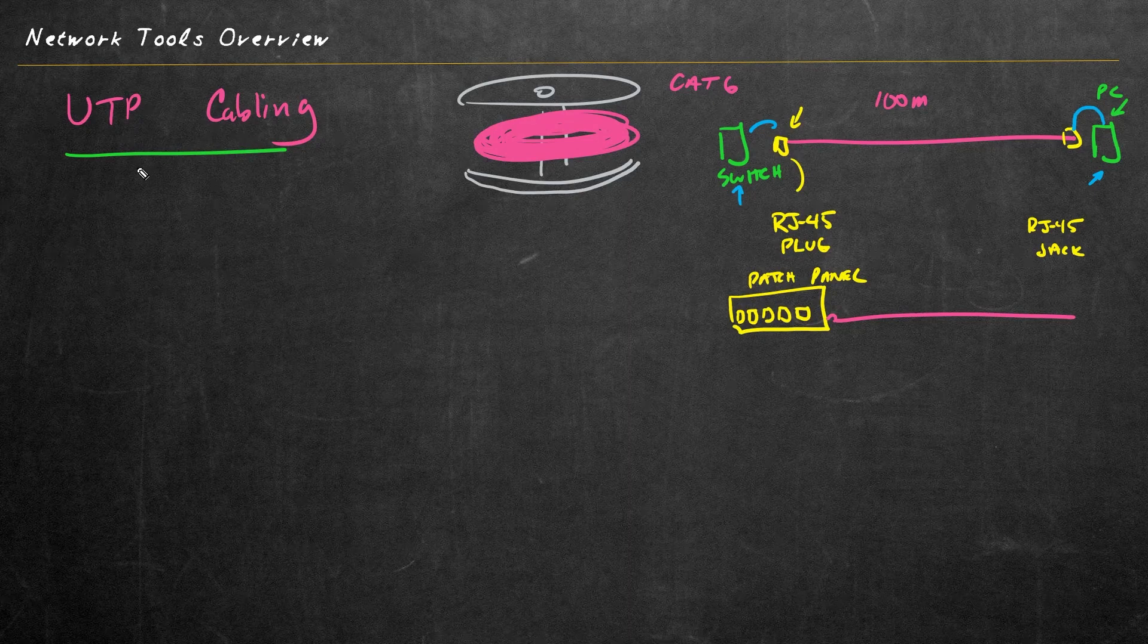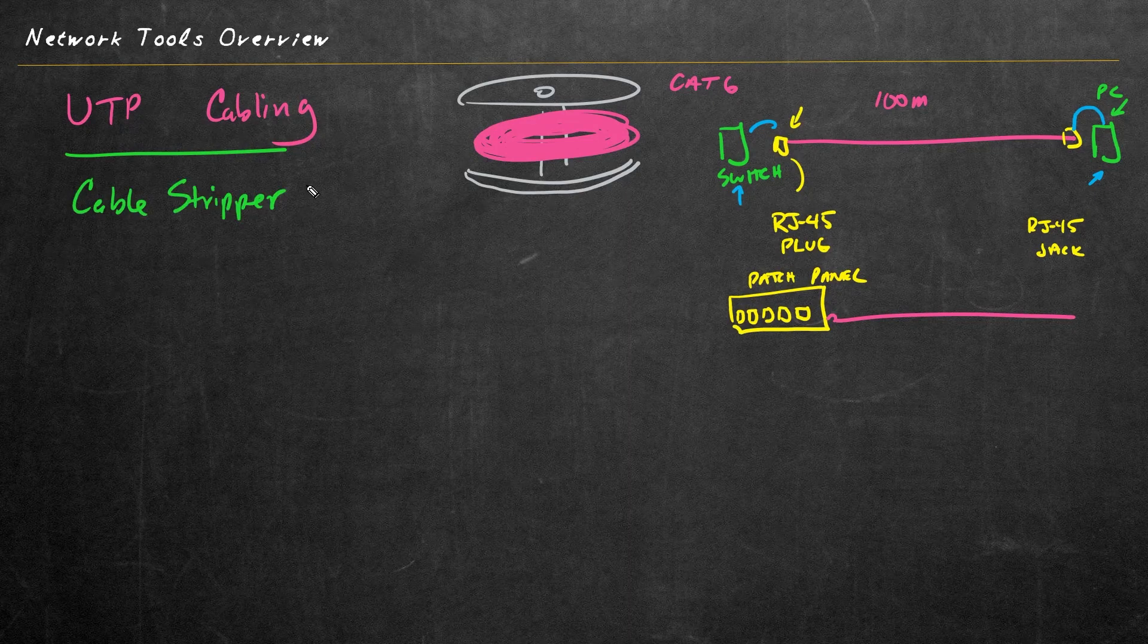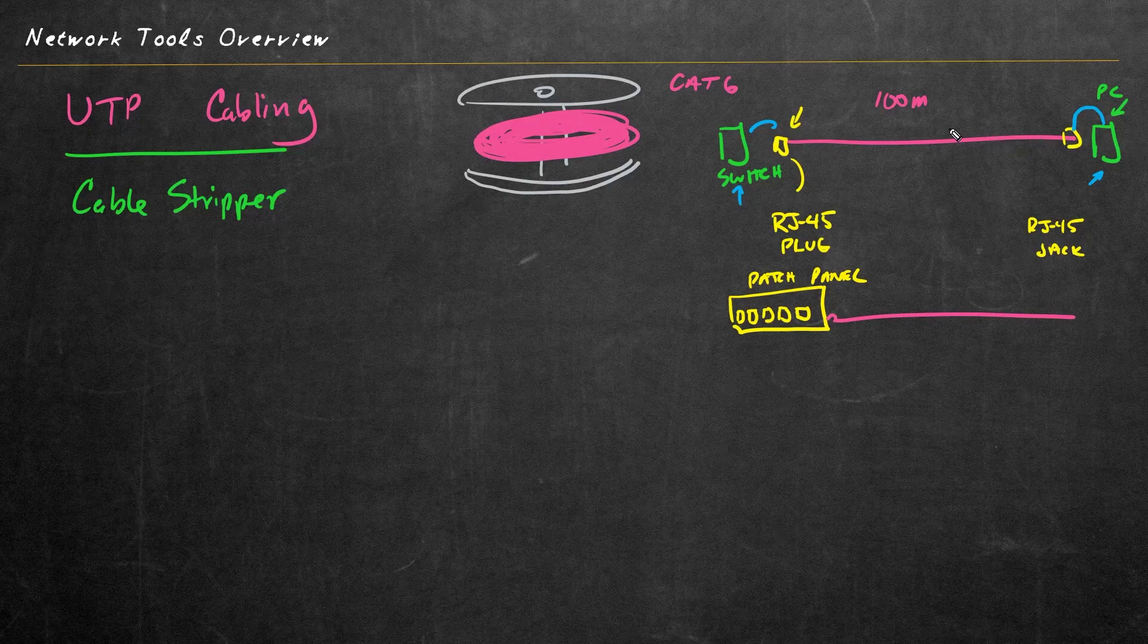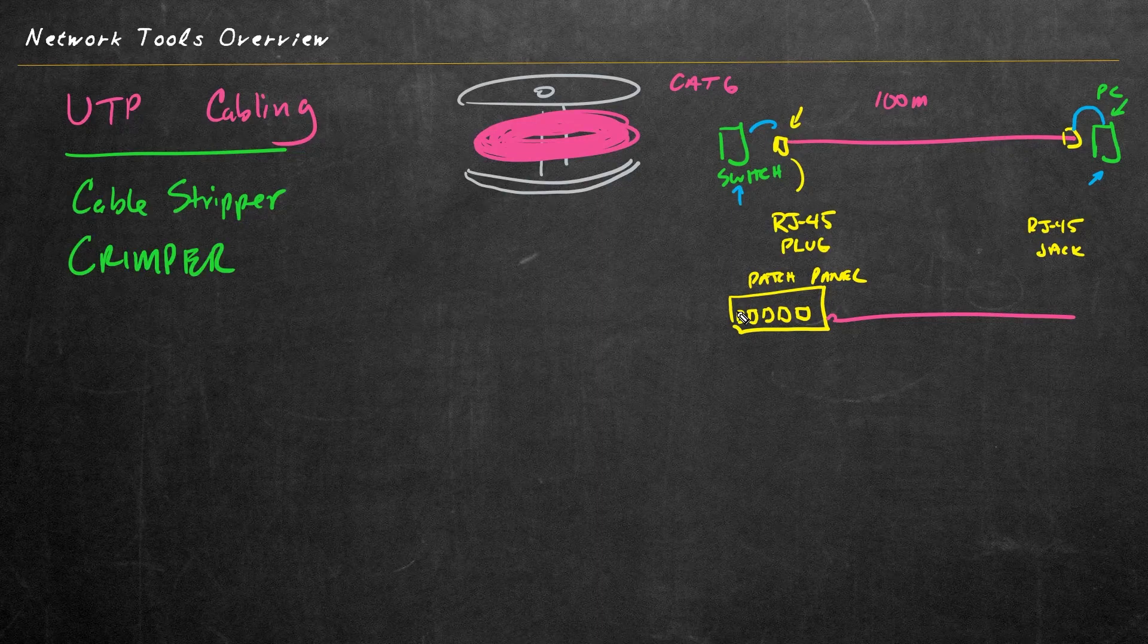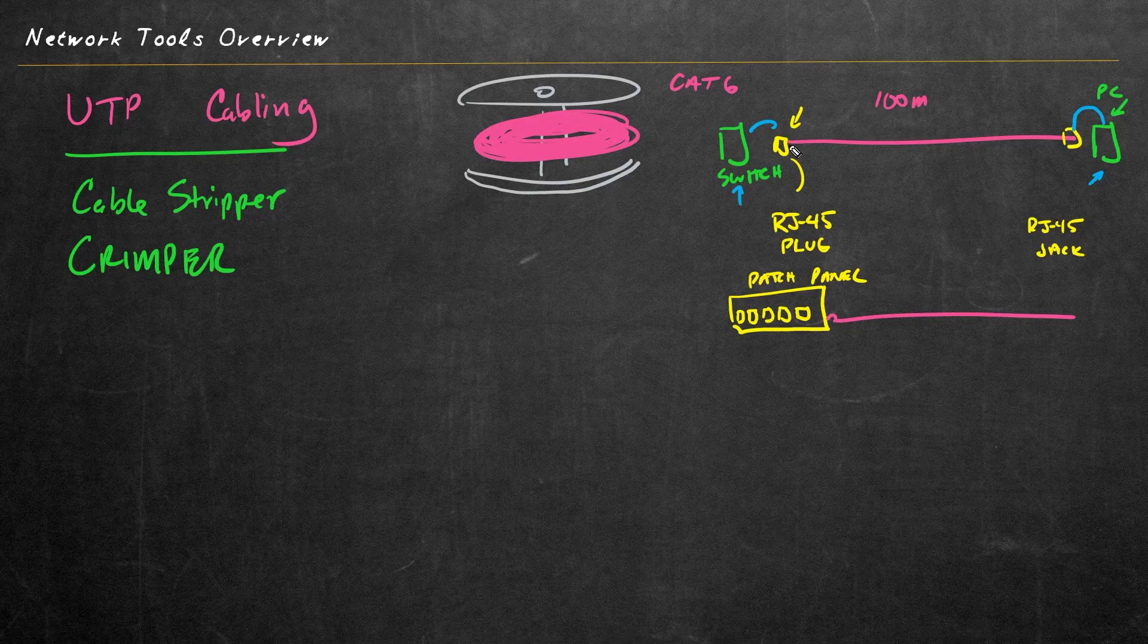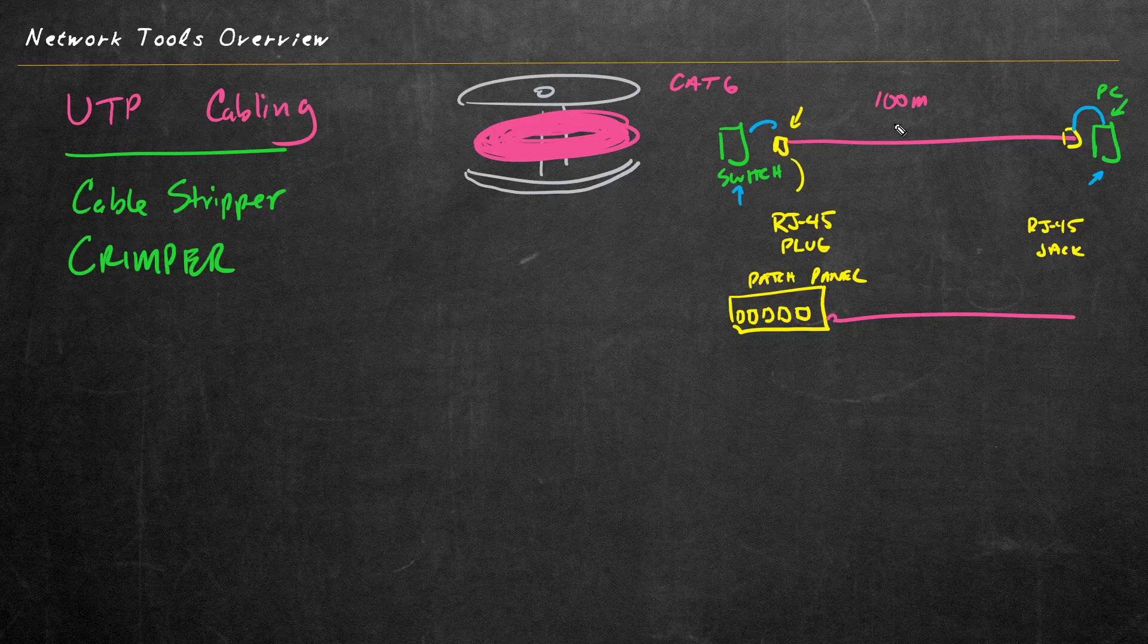We would also need similar tools if we're terminating our Ethernet cable at the back of a patch panel. So tools for UTP cabling would include cable strippers, where we could remove the plastic from the outside of the Ethernet cable. In addition to cable strippers, we're also going to need a crimper. And as we go through these videos, we'll go shopping together online and take a look at these tools and also how we would use them in terminating our Ethernet cable.